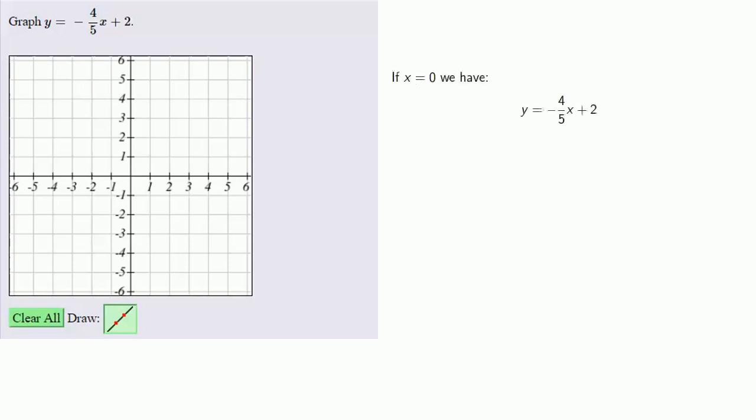So if x equals 0, then since y equals minus 4 fifths x plus 2, we find that y is equal to 2, so the point (0, 2) is on the line. And so the line passes through the point (0, 2).